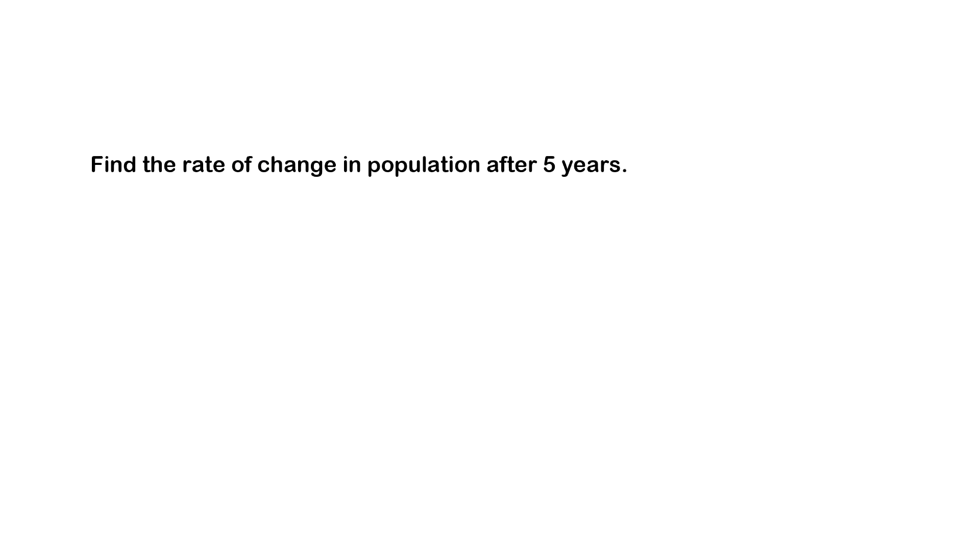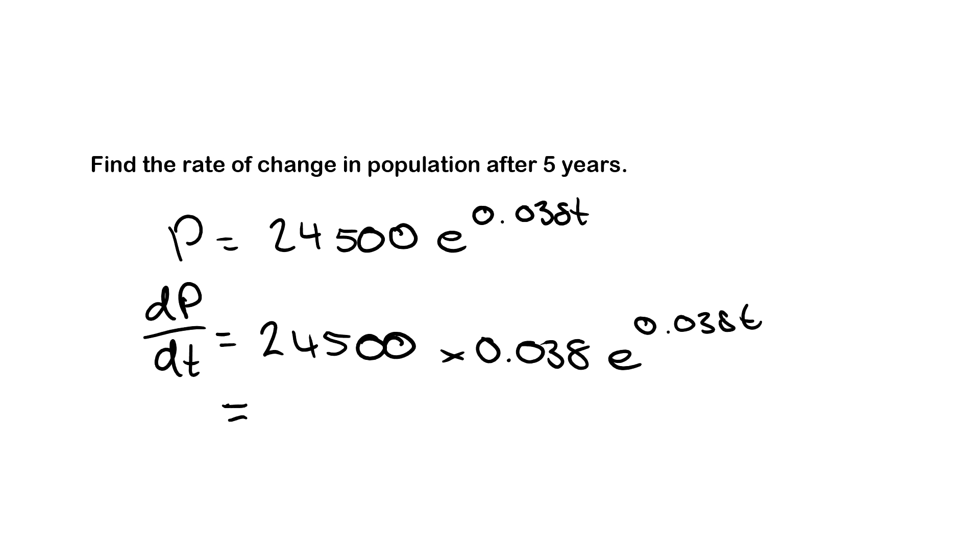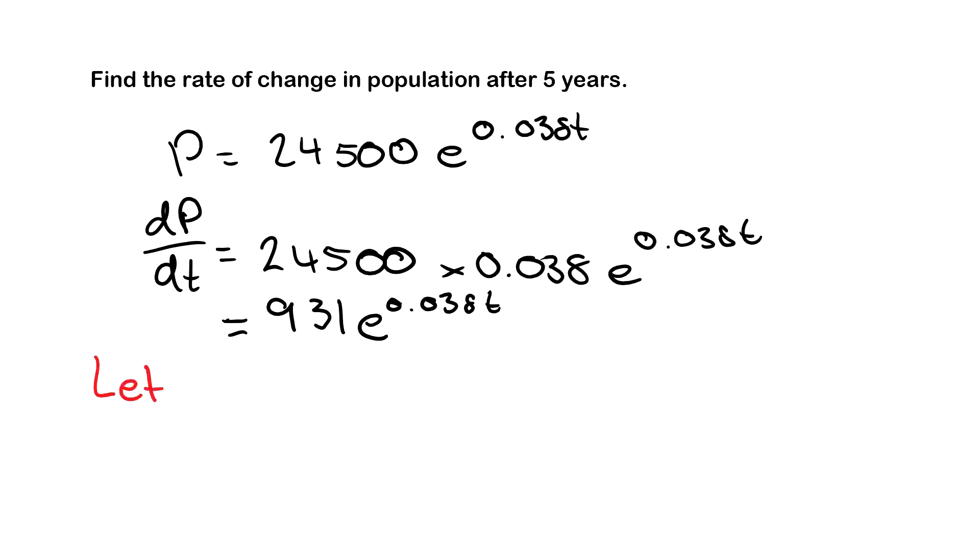Now the next question asks us to find the rate of change in population after 5 years. This involves differentiation. So remember, P equals 24,500e to the power of 0.038t. So we need to now differentiate this. So dP dt will be 24,500 multiplied by the differentiation of the top, which is 0.038, and then e to the power 0.038t. So this comes out as 931e to the power of 0.038t. Now if we want to define it after 5 years, the same thing, we say let t equal 5. So 931e to the power of 0.038 multiplied by 5. And that comes out as 1,126 people per year.